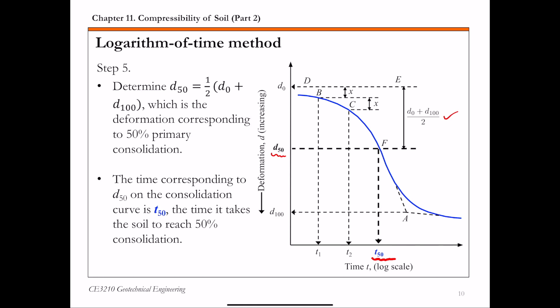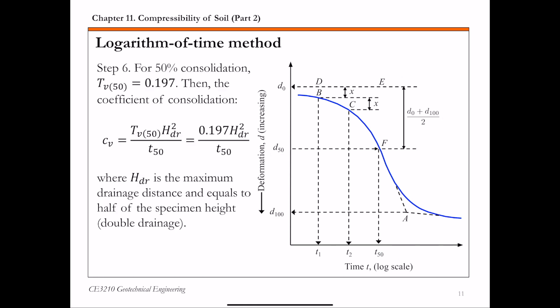Once you have this t50, the final step is to calculate your coefficient of consolidation. To do this, for 50 percent of consolidation, we know from Terzaghi's solution, the time factor t sub v is 0.197.